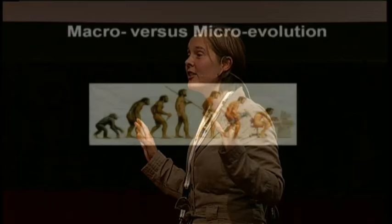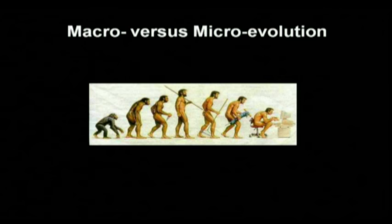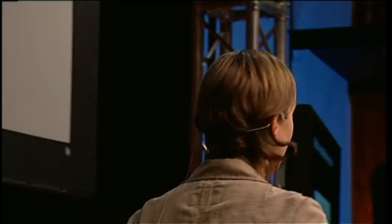Until now I've mainly focused on macroevolution — the diversification of species. But I'm going to show you that evolution is going much faster than we think, and it's all around us. So this is normal macroevolution; now we go to shorter timescales.